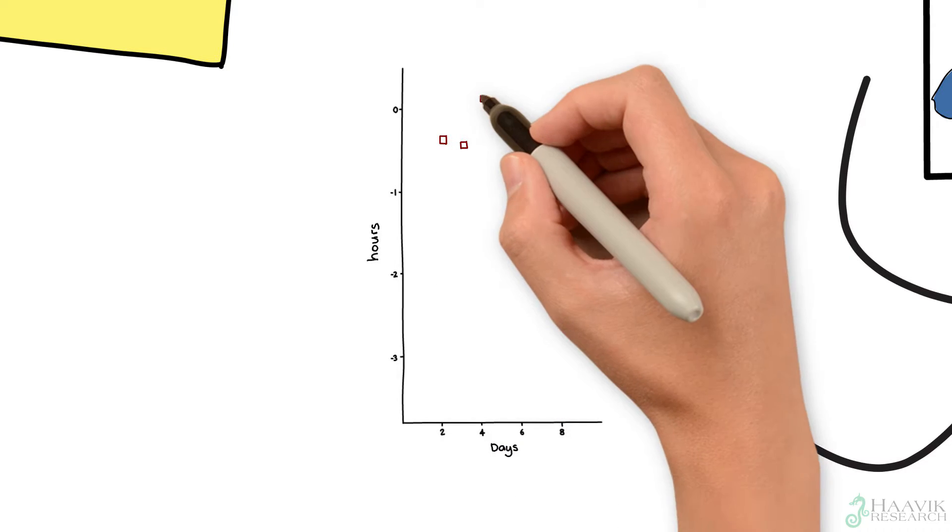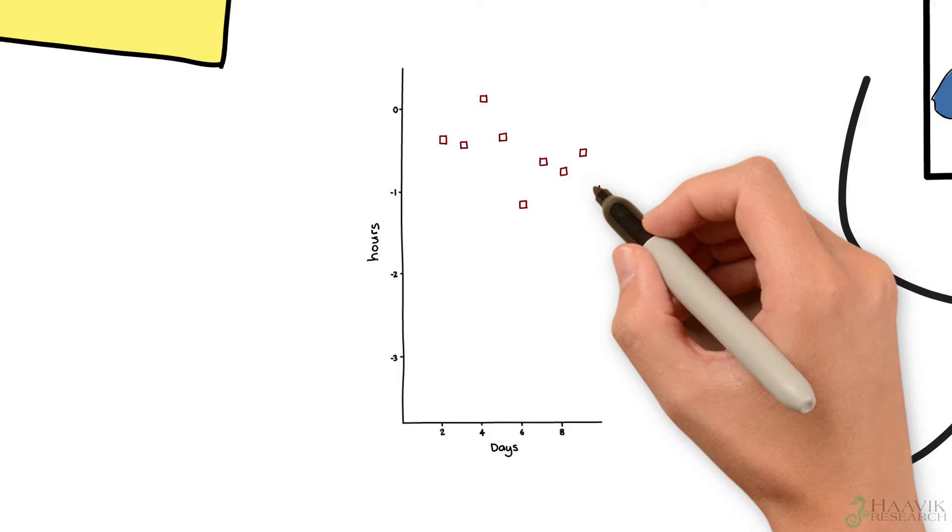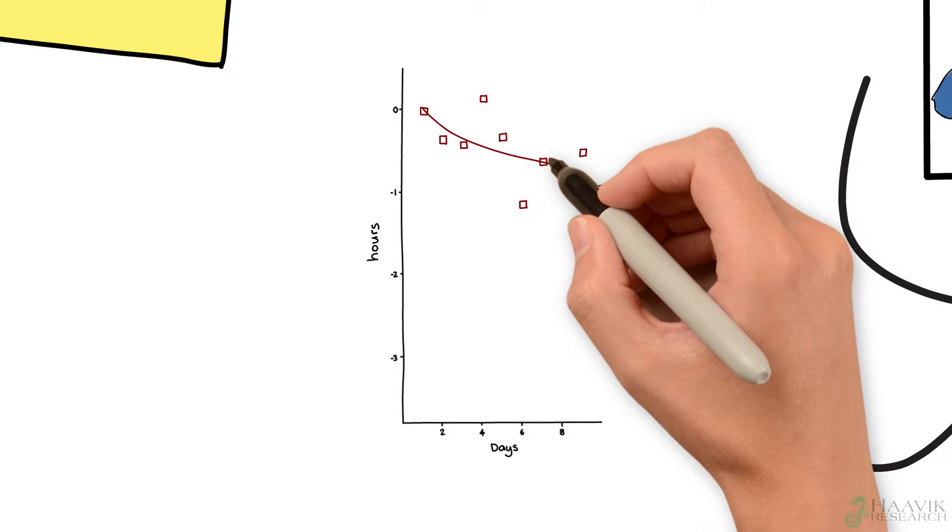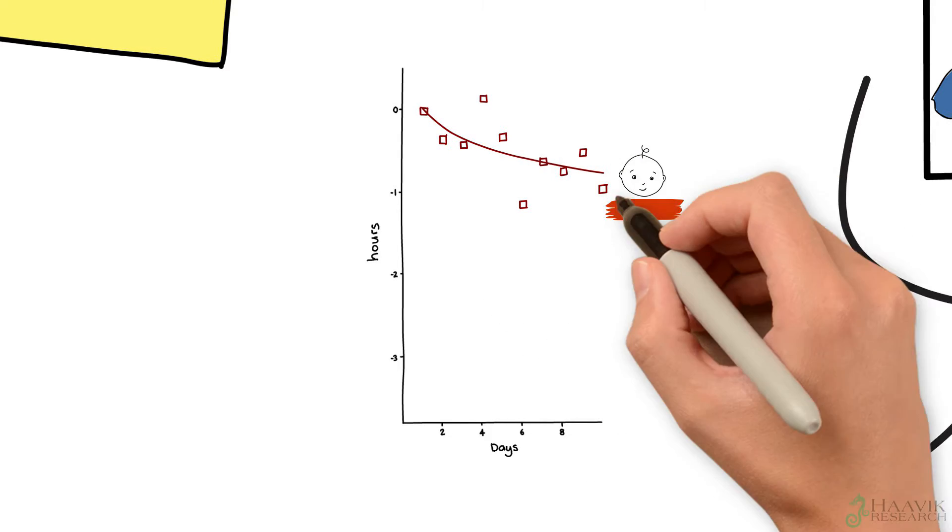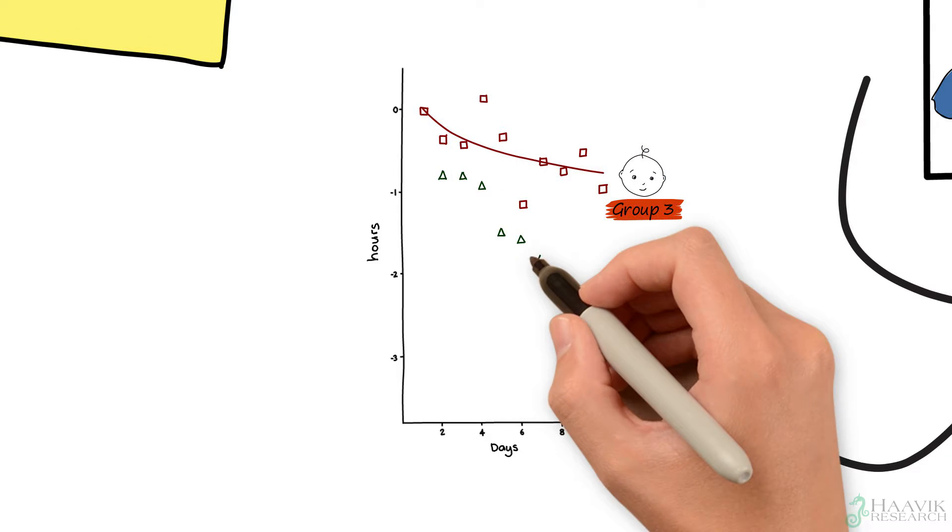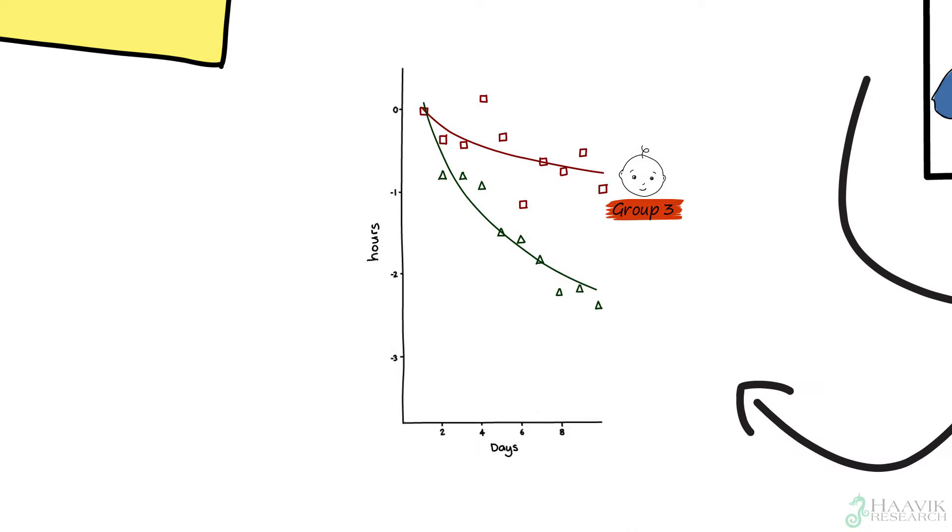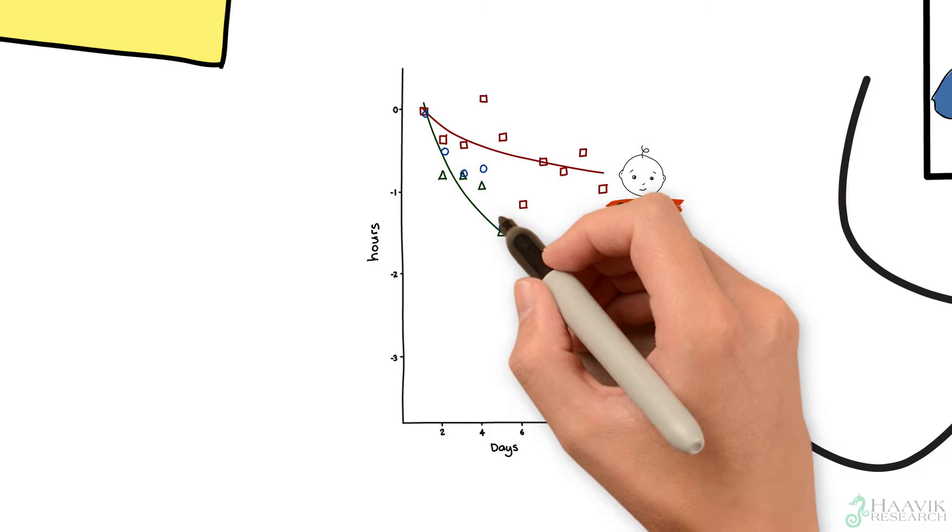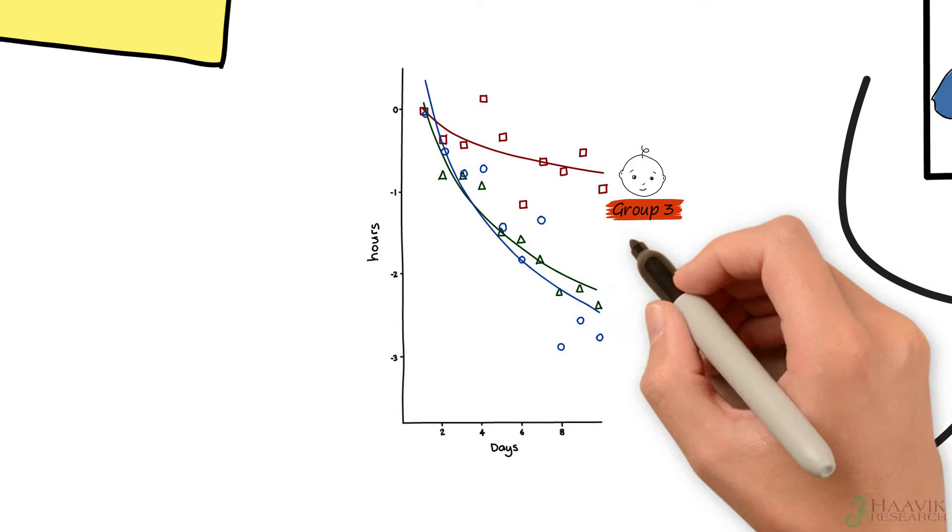We can see here that the babies who didn't receive chiropractic care still saw a reduction in crying time, by about an hour less. But now look at the babies who did receive chiropractic care. They've fared significantly better, with up to 3 hours less crying time in some cases.